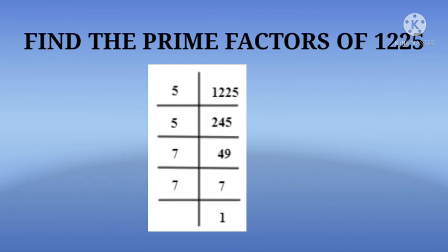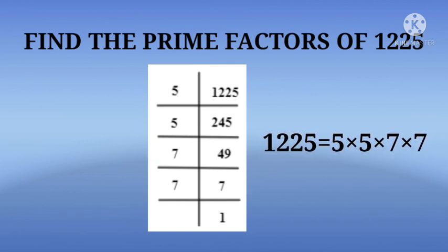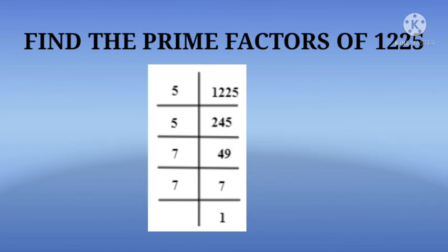Then we will get 49. Again we will divide 49 by 7, then we will get 7. That means 1225 equals 5 × 5 × 7 × 7. This is the division method.